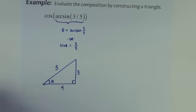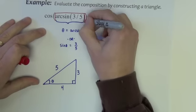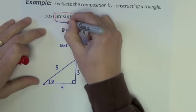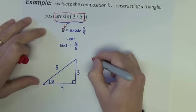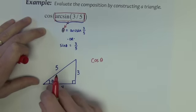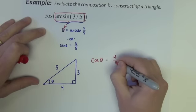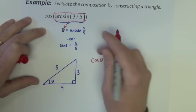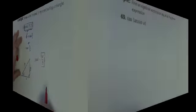Keep in mind that the answer to this expression here is theta, the angle. So now I really just want to know what's the cosine of the angle, the angle right here. Cosine of the angle is four-fifths. This is equivalent to four-fifths.